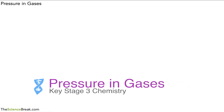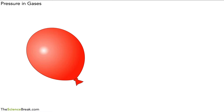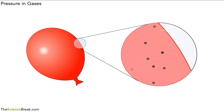Today we're looking at pressure in gases for key stage 3 chemistry. To help us understand this, let's start with a balloon — a nice simple example. The balloon is blown up and has gas in it. If we were able to magnify and look very closely inside the balloon, we might be able to see how the particles in there are behaving — though remember, you can't actually do this in real life; the particles are way too small. Here are the particles of the gas or gases that are inside the balloon.